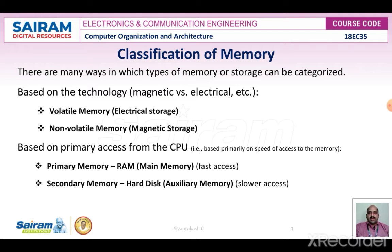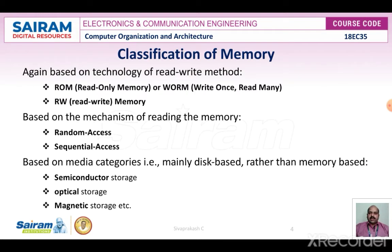Primary memories are generally called main memory or random access memory, which are fast-accessing memories. Secondary memories are called auxiliary memory, which have slower access — for example, hard disk, external memory, or external devices connected to the computer. Based on the technology of the read or write method, memory is classified as read-only memory, write-once read-many-times memory, read-write memory, or random access memory.